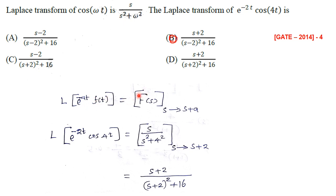For e^{-at}·f(t), after taking the Laplace transform of f(t), s is shifted by s plus a. Here instead of a we have 2. The Laplace transform of cos(4t) is s divided by (s² + 16). Applying the shift, s is replaced by s plus 2, giving (s+2) divided by ((s+2)² + 16). So option B is the correct answer.